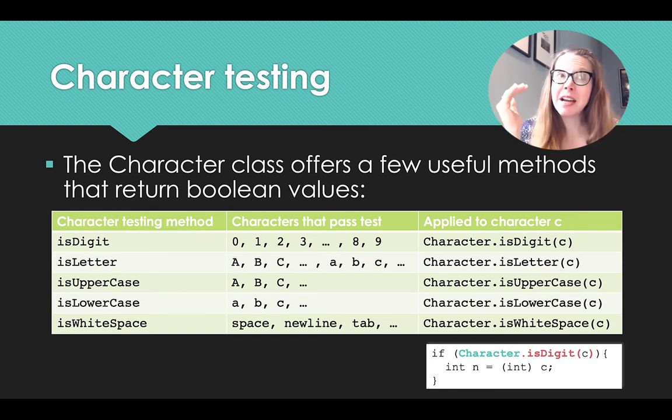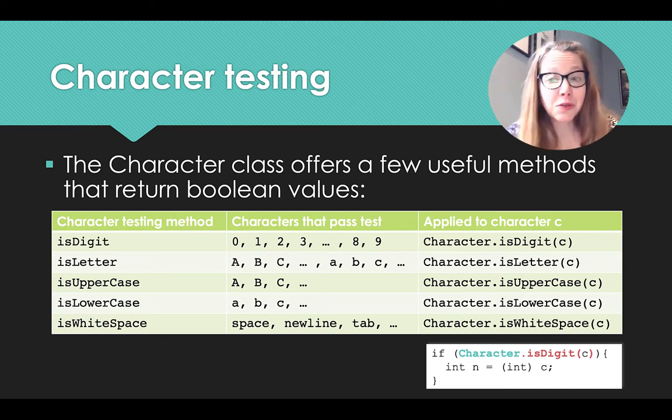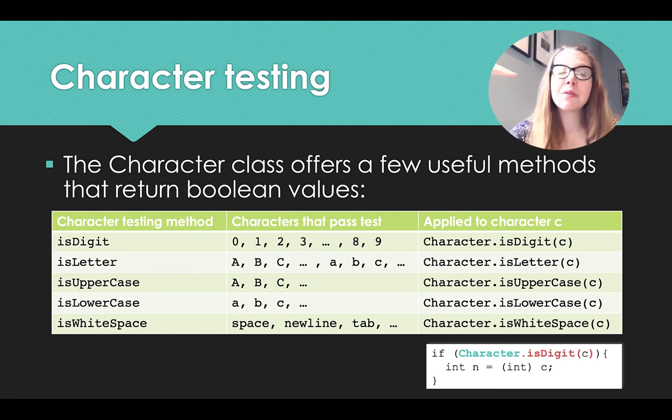And this is safe to do because what that if statement is expecting is a Boolean value. It's expecting something that returns true or false. Well, we're not looking if something is greater than or less than another, but we are returning true or false. We're returning true if C is a digit 0, 1, 2, 3, 4, 5, 6, 7, 8, 9. And we're returning false if it's not. So this is an interesting situation that we'll get to make use of a lot in the future.